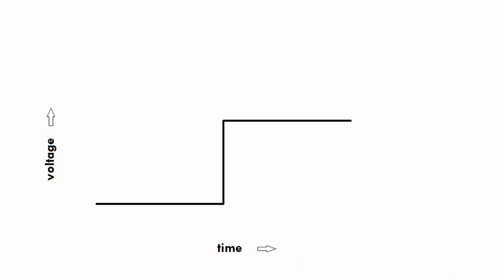What this means for the output voltage from that switch, if you look at the graph, is that it doesn't look like the clean step you want — which is what it looks like in theory. Instead, it looks more like this, where you have this noise.